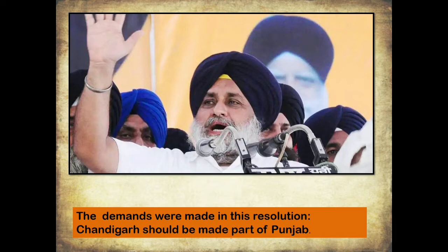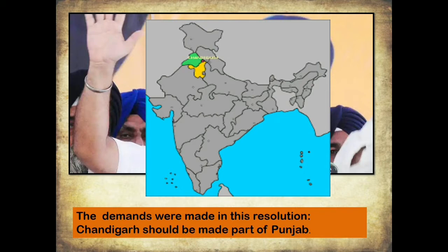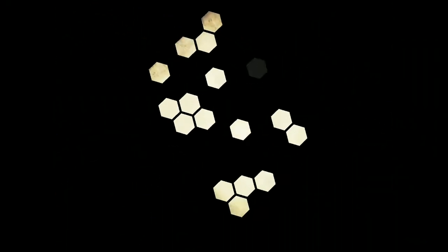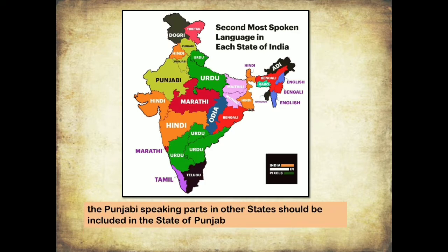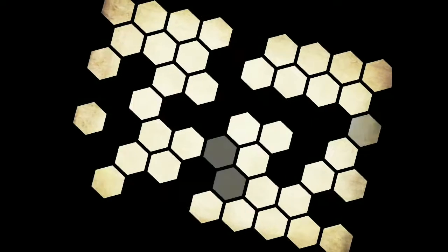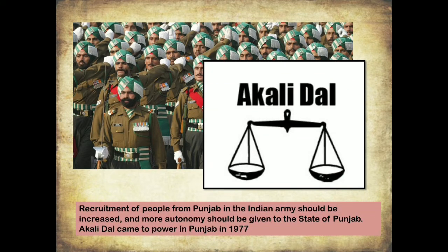The first demand in the Anandpur Sahib Resolution was that Chandigarh should be made a part of Punjab. The second demand was that Punjabi-speaking people residing in other states should also be included in Punjab, so that all Punjabi speakers could reside together. They also demanded increased recruitment of people from Punjab in the Indian Army.